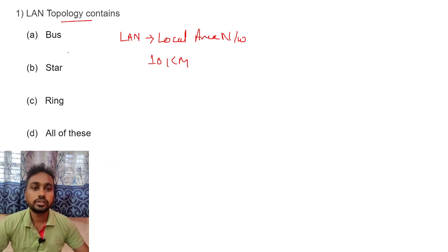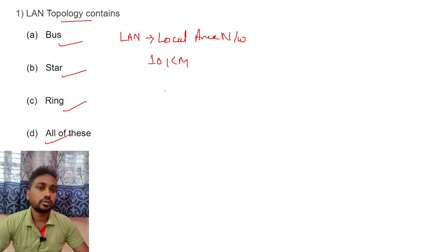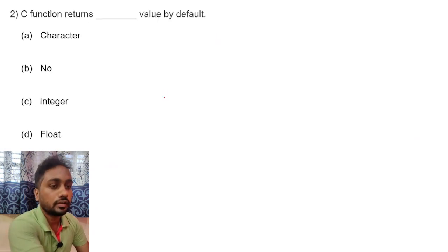LAN topology consists of bus topology, star topology, and ring topology. So all of these — option D — is the right answer here. LAN uses bus, star, and ring topologies.